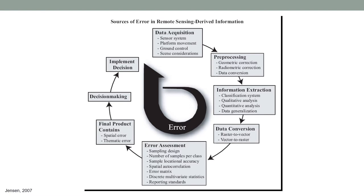At the pre-processing stage, geometric correction, radiometric correction, data conversions such as changing coordinate systems, and resampling all introduce a little more error. Then at the information extraction stage, we classify the remotely sensed data into thematic maps. There is a qualitative analysis where you inspect the map visually, and a quantitative analysis as we will see in this lesson. Data generalization is also involved, where a class can be broken into subclasses. There is also data conversion — raster to vector or vector to raster — once the classified map is produced.